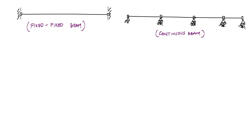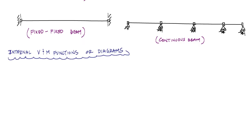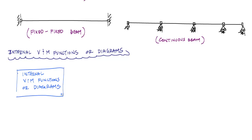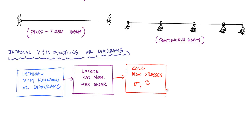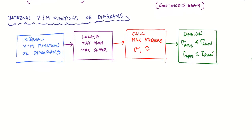One of the big things we want to be able to do is come up with internal shear and moment diagrams or functions that describe the internal shear and moment at any location along the length of a beam. Knowing those functions helps us locate the maximum internal shear and maximum moment, and from that we can calculate the maximum normal stress and maximum shear stress.